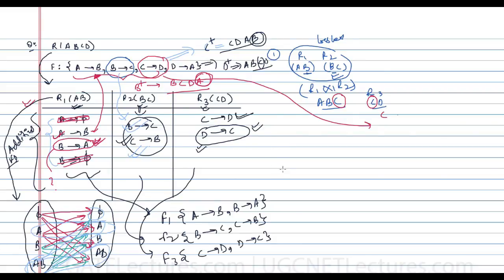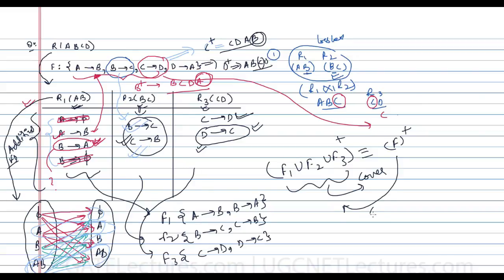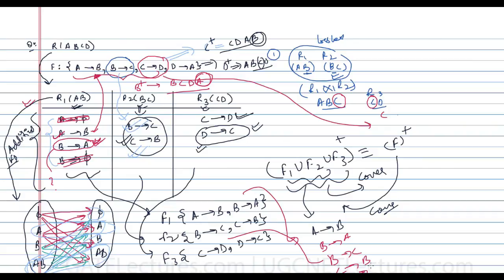A decomposition is functional dependency preserving if (F1 ∪ F2 ∪ F3)⁺ is equivalent to the original F⁺. Taking F1 ∪ F2 ∪ F3, we get: A→B, B→A, B→C, C→B, C→D, D→C. These are the functional dependencies obtainable from the three sub-relations.